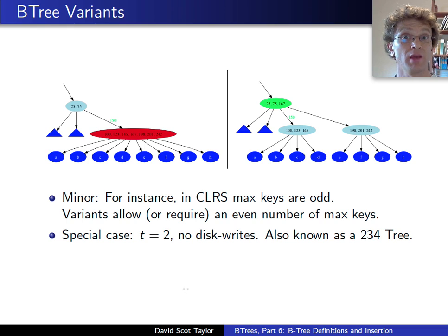We've already seen one special case of B-trees. That is, two-three-four trees. Those are B-trees when T happens to be equal to two, and you don't actually worry about disk writes. Each node is going to have one to three keys. The two-three-four tree.